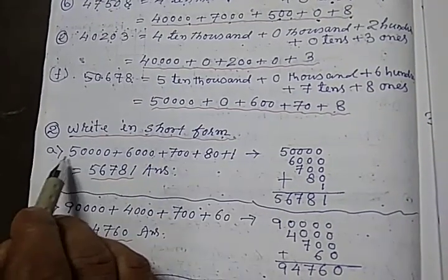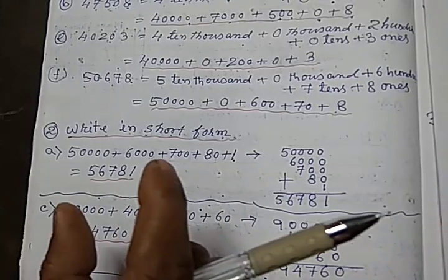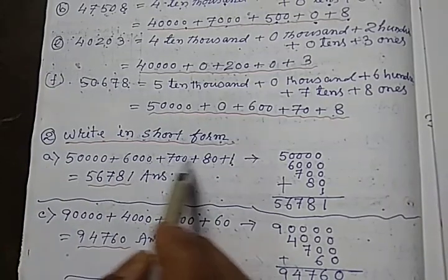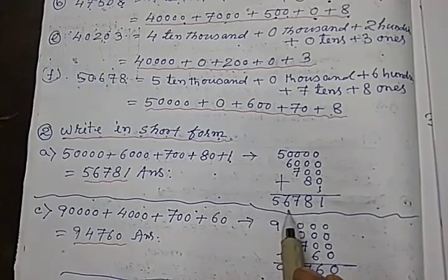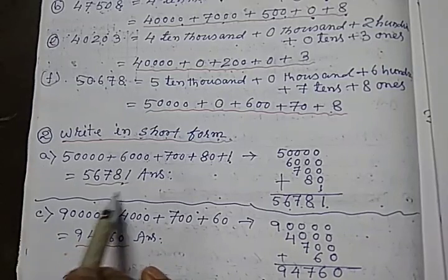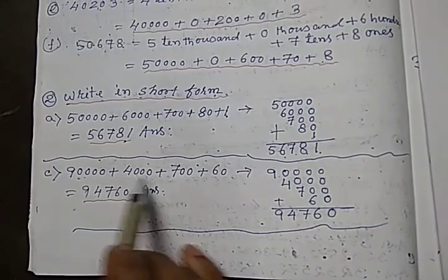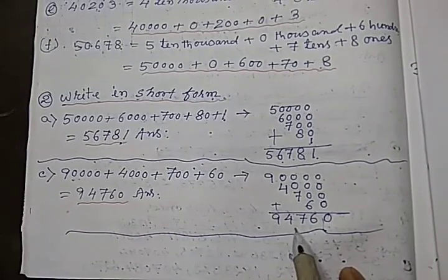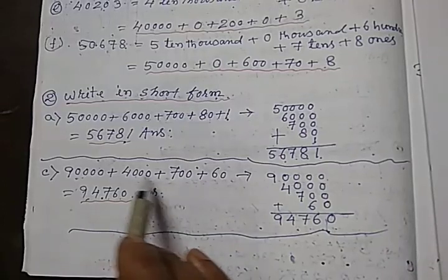Now write in short form. This is given in exponent form and you have to write it in short form. You may do it easily by adding all these numbers. I have added all the numbers and got 56,781 — this is the short form of that exponent form. Similarly, there is 90,000, and adding all those numbers gives 94,760, which is the short form of that exponent form.